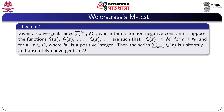We now state the Weierstrass M test. Given a convergent series Σ(n=1 to ∞) Mₙ whose terms are non-negative constants, suppose the functions f₁(z), f₂(z), fₙ(z), etc. are such that |fₙ(z)| ≤ Mₙ for n ≥ N₁ and for all z in D, where N₁ is a positive integer.